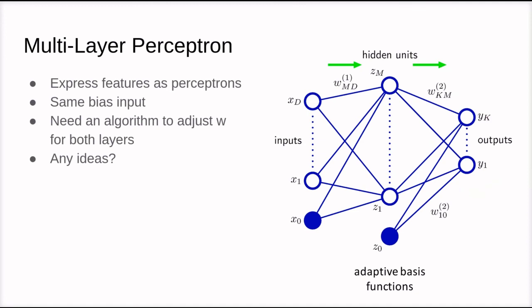And in effect, what we're doing here is we're replacing all of the phi functions with perceptrons. We're adding biases to these perceptrons as we did before. But now we need an algorithm to adjust the weights of both layers. And can you think of any ideas how to do that?